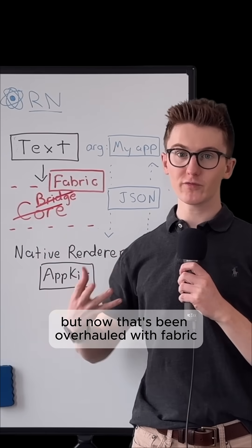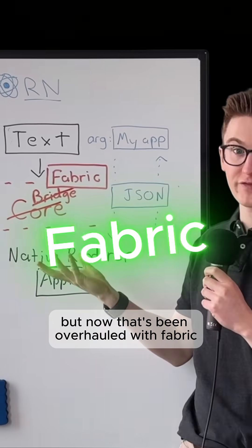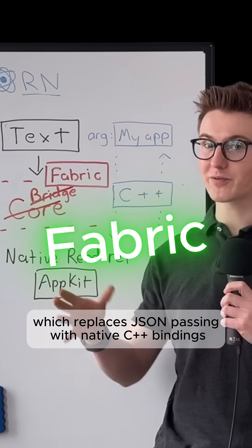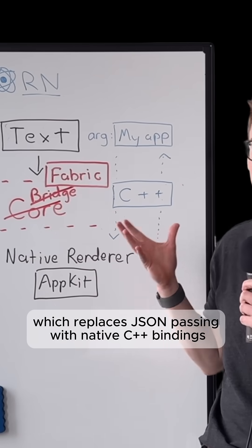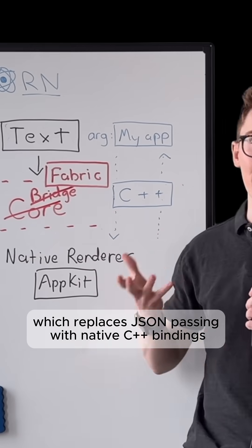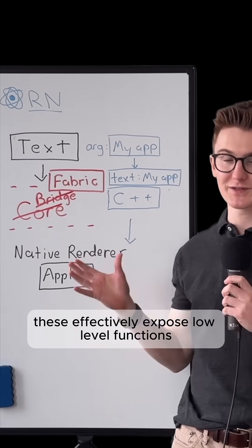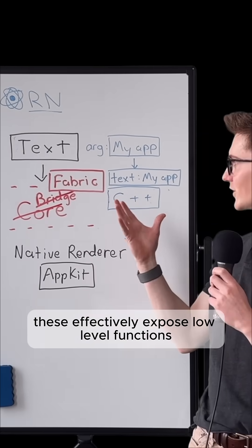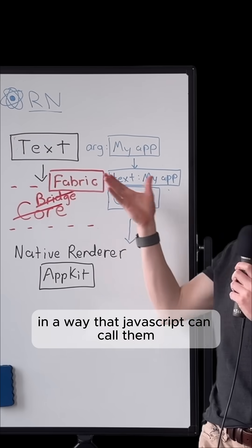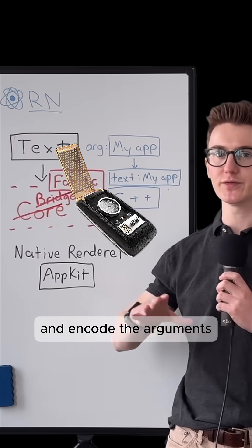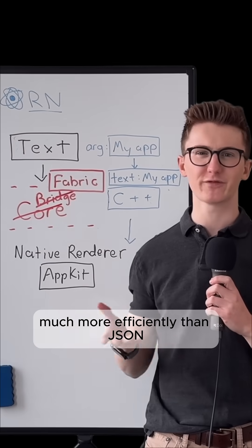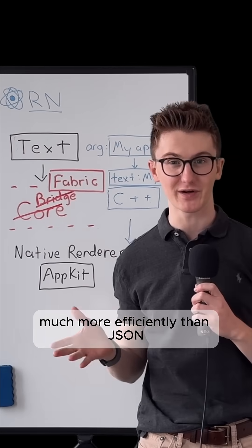But now that's been overhauled with Fabric, which replaces JSON passing with native C++ bindings. These effectively expose low-level functions in a way that JavaScript can call them and encode the arguments much more efficiently than JSON.